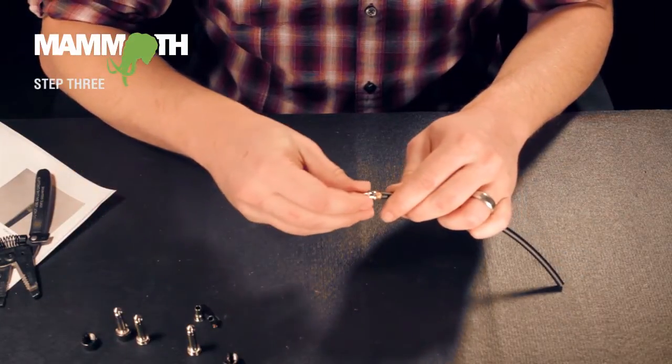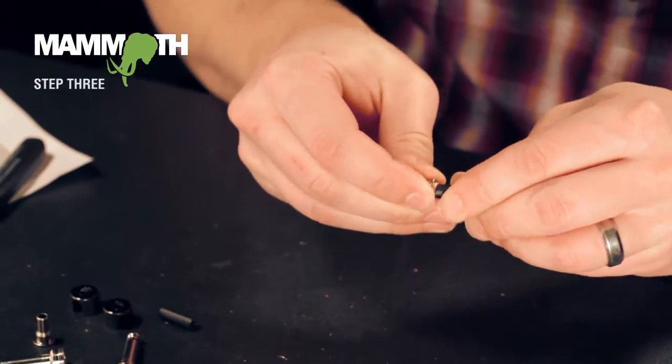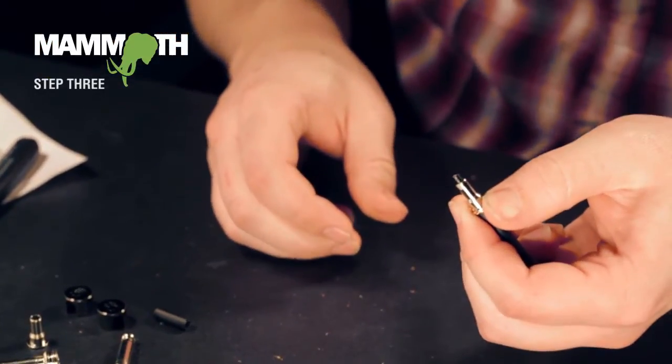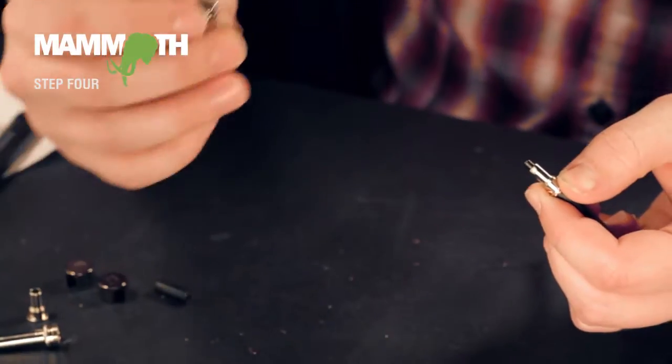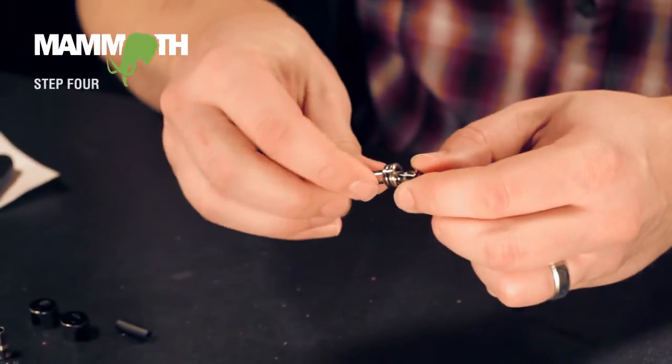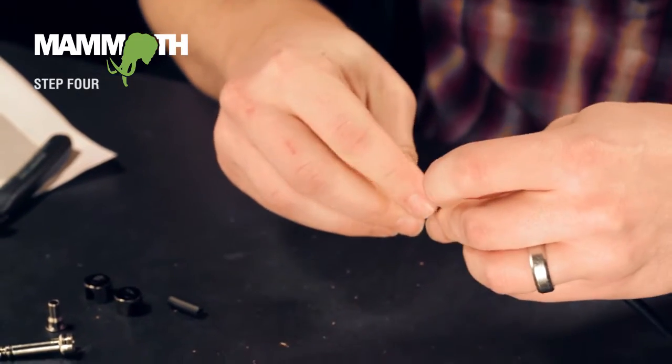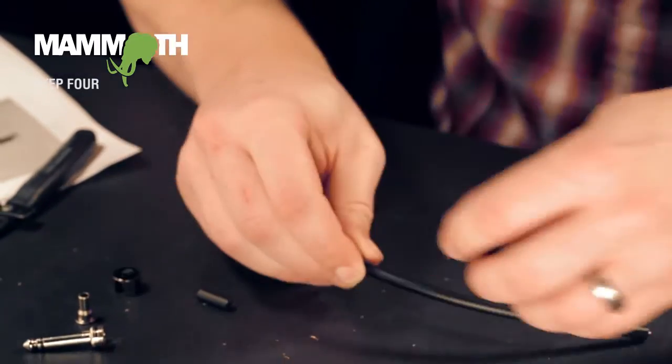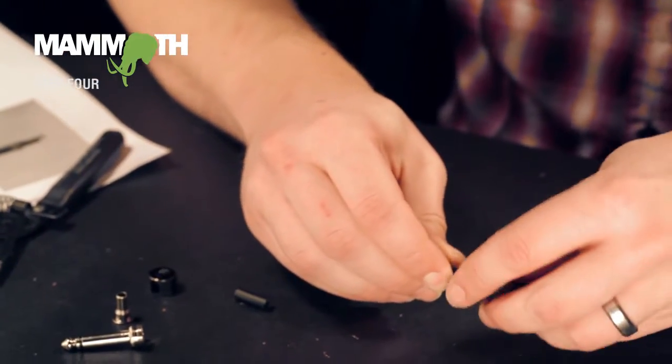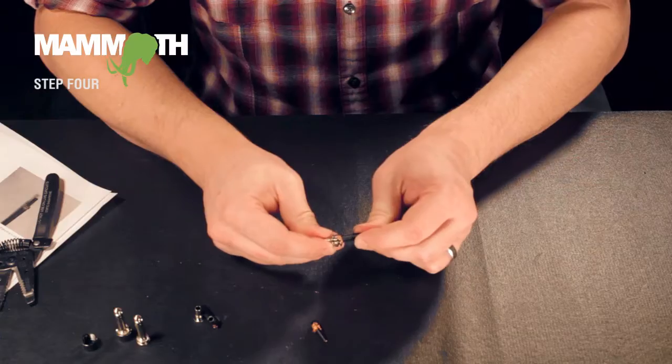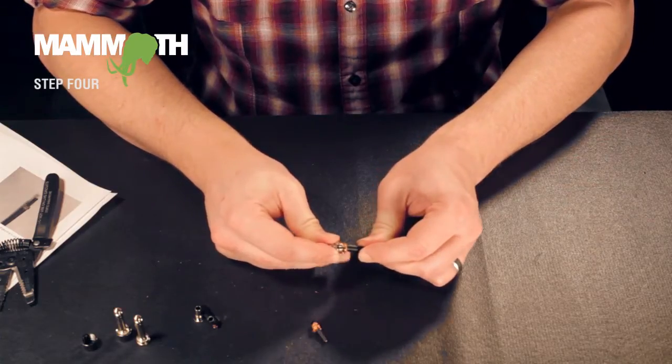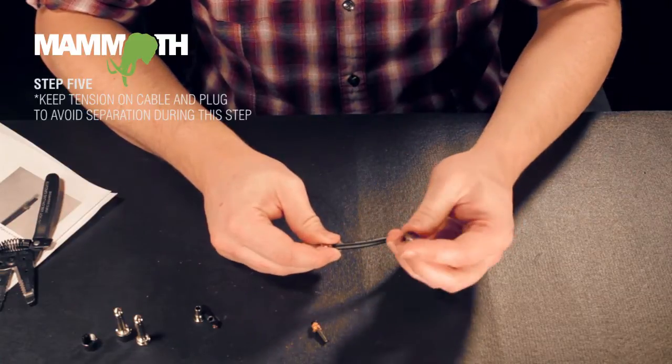You're going to take your shield plug. You'll have a little bit sticking out the end there. Then take your actual plug, push it on. And this is the only tricky part: you have to have good tension between the plug and the cable while you're putting your cap on.